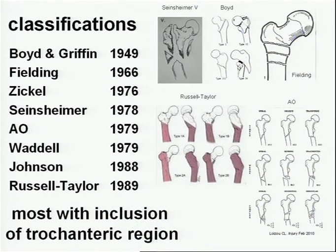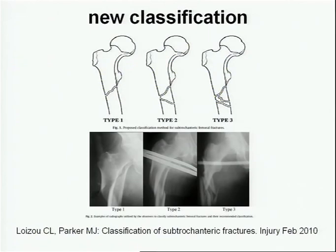If you look at the classifications, you find more than 15 in the literature. They nearly all include in their subgroups fracture lines which include the trochanteric region, so it's hard to compare or focus on sub-trochanteric fractures when comparing these results.